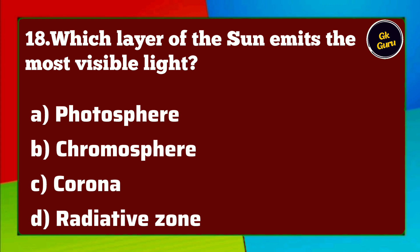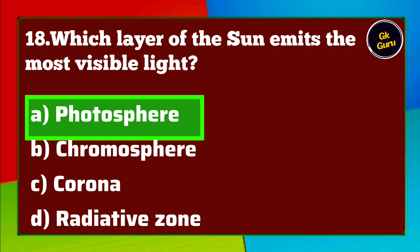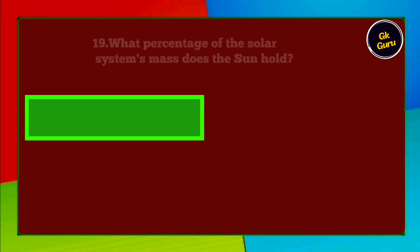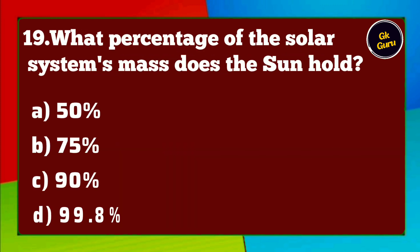Which layer of the sun emits the most visible light? A. Photosphere B. Chromosphere C. Corona D. Radiative zone. Answer A. Photosphere.